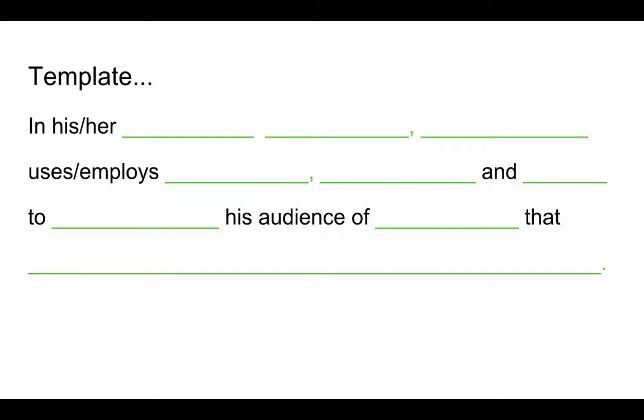And then the third thing that people came up with in class today was descriptive imagery. So those three things they thought were the most impactful of this particular piece. So now we have 'In his 1989 memoir Lives on the Boundary, Mike Rose employs narrative mode, engaging dialogue, and descriptive imagery.'